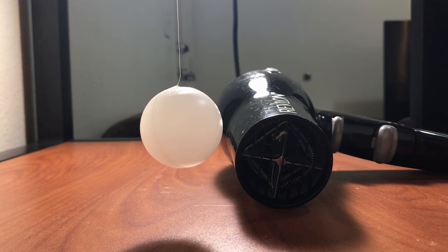In this demonstration, we have a ping pong ball hanging near a blow dryer. When the flow is turned on, the stream of air is at a higher velocity than the surrounding air, which, as seen from Bernoulli's equation, will create a low pressure zone. This results in a pressure imbalance on the ping pong ball that will push it towards the flow of air.